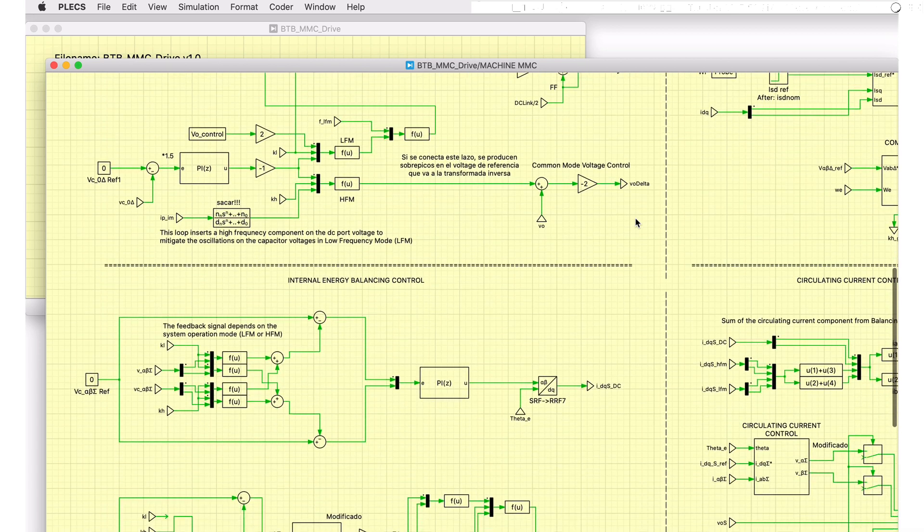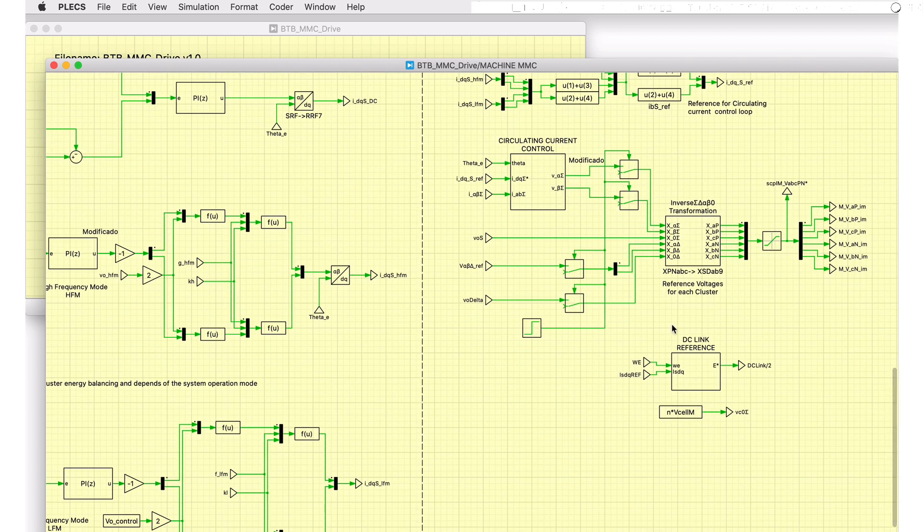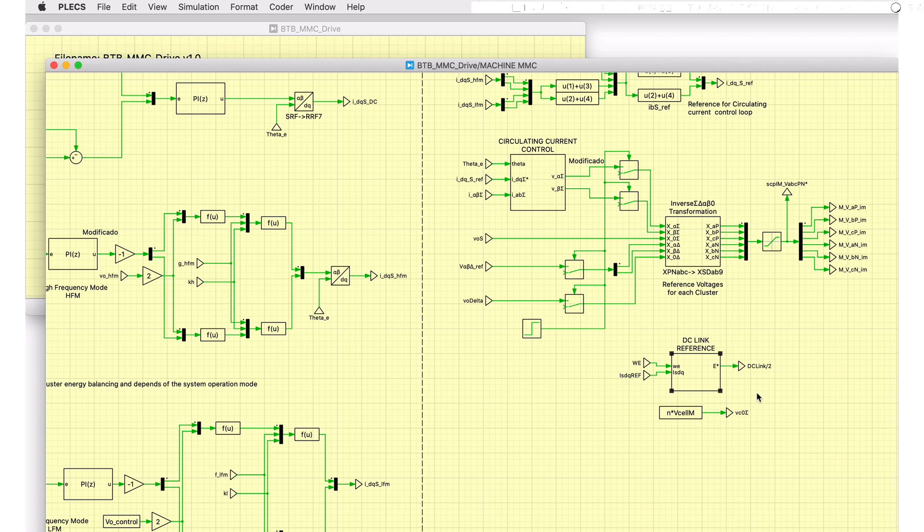Controlling the machine with the variable DC-link voltage, depending on the machine speed, decreases the mitigation variables required to achieve a proper energy balance control.